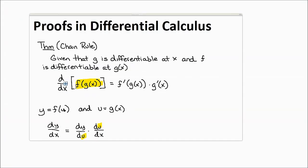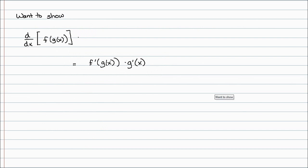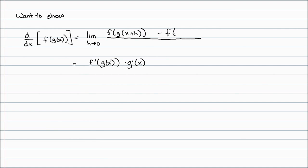The derivative with respect to x of the composition is f prime of g of x times g prime of x. In between, I'm going to use the limit definition: the derivative is just the limit as h approaches 0 of our function f of g evaluated at x plus h, minus our function evaluated at x, all divided by h. We're going to work with this intermediate limit and try to manipulate it into the desired derivative.